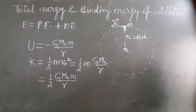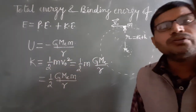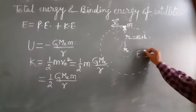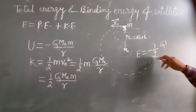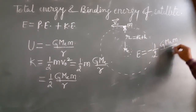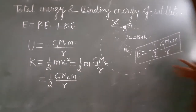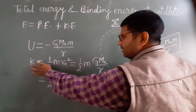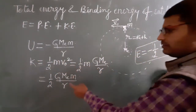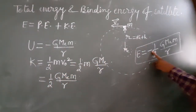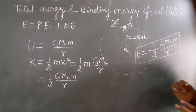So what about total energy? Taking the common factor, we get 1/2 minus 1, which gives minus 1/2. So the total energy of the satellite is equal to minus 1/2 G M_e m upon r. You can see that the kinetic energy and total energy of the satellite are equal in magnitudes, but kinetic energy is positive and total energy is negative.